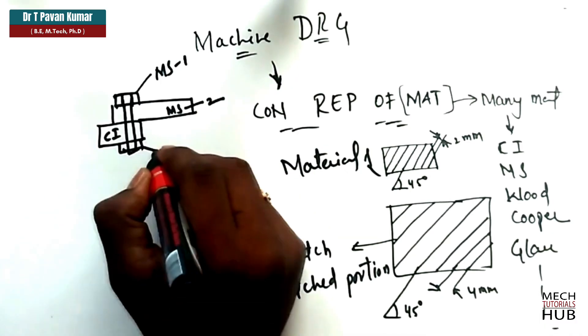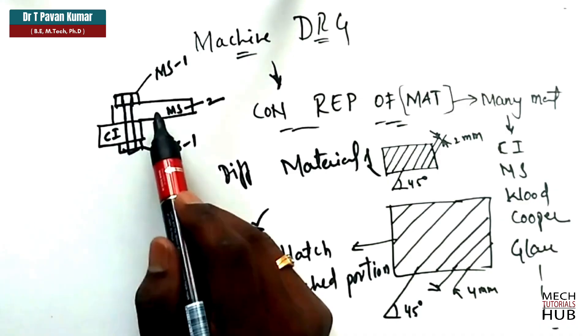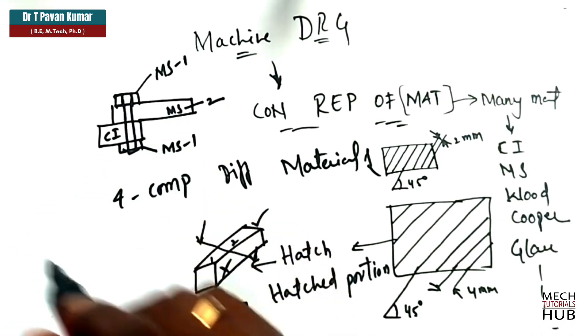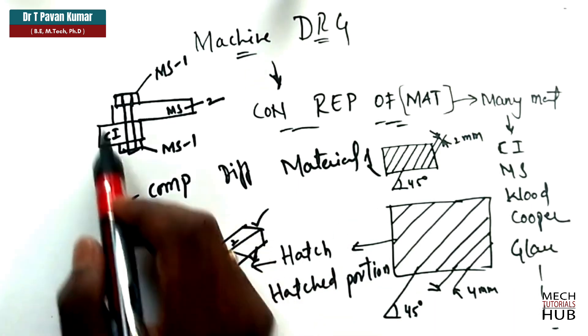Cast iron. Now, the nut is again made of mild steel, grade one. Now, here you could see one, two, three, four components. Now, the four components are not made of same single material. So, what happens in such cases?